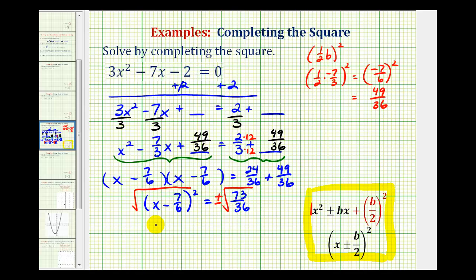On the left side, we have one factor of x - 7/6 equals plus or minus. To simplify this, when we have a fraction underneath the square root, we can square root the numerator and denominator separately. The denominator simplifies perfectly to 6, and the numerator does not simplify.